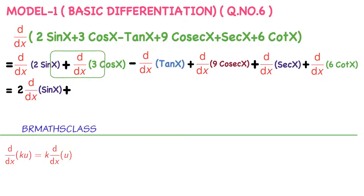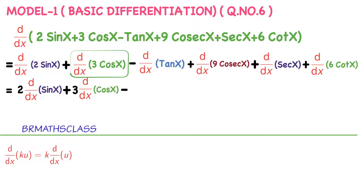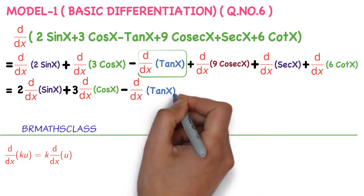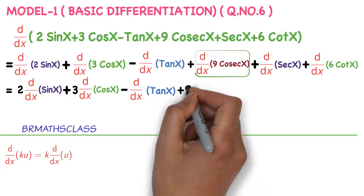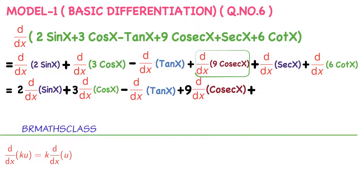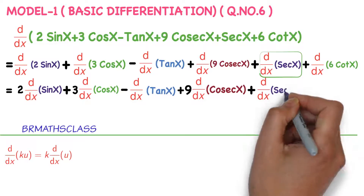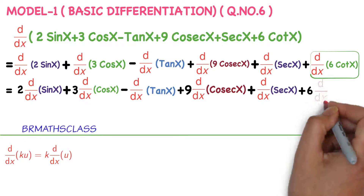Observe the derivative of 3 cos x — 3 is a constant, so we take 3 outside: 3 into derivative of cos x. Derivative of tan x is a direct formula, so we write d by dx of tan x. For 9 cosecant x, since 9 is constant, we write 9 into derivative of cosecant x. Derivative of secant x is a direct formula, so we write it as is. For 6 cot x, using the constant multiple rule, we write 6 into derivative of cot x.